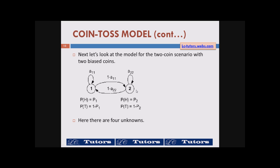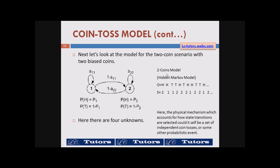What we get from this model is a sequence of outputs. The person tells you that he got head, head, tail, tail, head, tail — whatever sequence. But you cannot predict the state, because when he tells you he got a head, it can be coin one or it can be coin two. So once you get heads, you might assume it may be state one or state two.